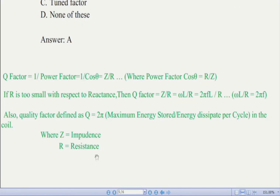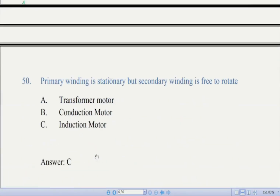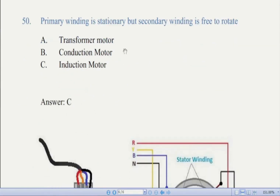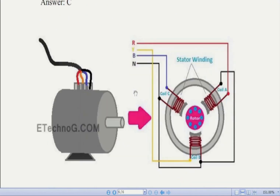Now we come to question number 50: primary winding is stationary but secondary winding is free to rotate — there are three options. The correct answer is C, induction motor. From the figure, an induction motor has two main parts in its construction: one is the stator and the second is the rotor.